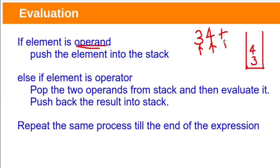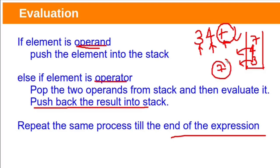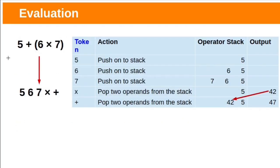The next character read is an operator. If the element is an operator, pop the top two operands from the stack and perform the operation — for example, 4 plus 3 equals 7. Push the result back onto the stack. For a bigger expression, repeat this process until the end of the expression. The rightmost token empties the operator stack except for the final result, which remains in the stack.